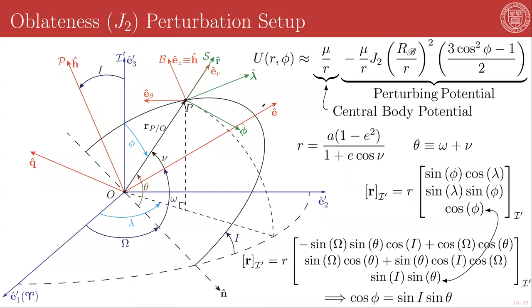The perturbing potential in this case is given by a single term, which has the form negative mu over the orbital radius magnitude times the J2 constant times the equatorial radius of the central body divided by the orbital radius magnitude squared times the first Legendre polynomial in cosine phi, which evaluates to 3 cosine squared phi minus 1 over 2.